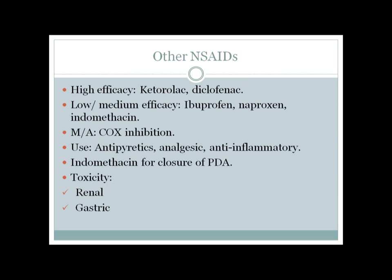Other NSAIDs can be divided into high-efficacy drugs — ketorolac and diclofenac — and medium/low-efficacy drugs such as ibuprofen, naproxen, and indomethacin. Diclofenac is commonly used as a 50 mg suppository (trade name voltaren) in our hospital. Medium-efficacy NSAIDs are used mainly in rheumatologic disorders like rheumatoid arthritis and osteoarthritis. Unlike aspirin, other NSAIDs inhibit COX reversibly.